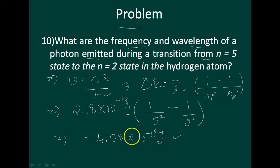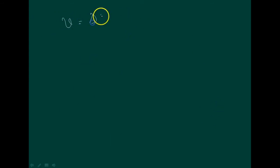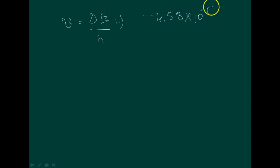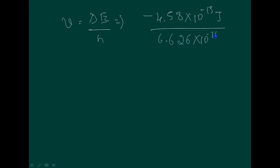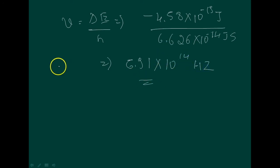Next, find the frequency of the photon. v equals delta E divided by h. The delta E value is minus 4.58 into 10 raised to minus 19 joules, divided by Planck's constant 6.626 into 10 raised to minus 34. Solving this gives a frequency of 6.91 into 10 raised to 14 hertz.